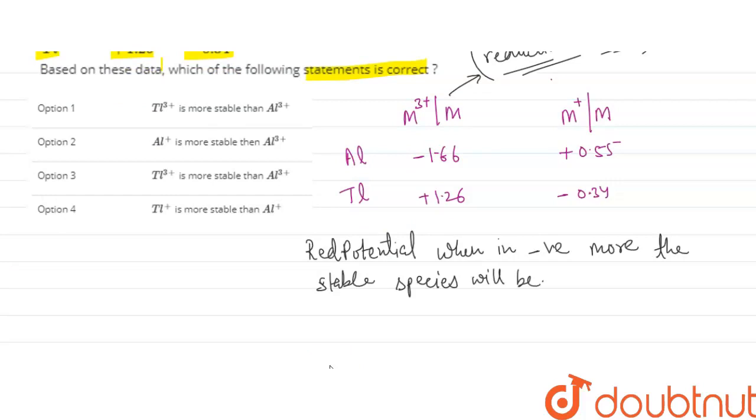What does it mean? It means when the reduction potential is in negative value, the stability will increase, more stable will be the element.